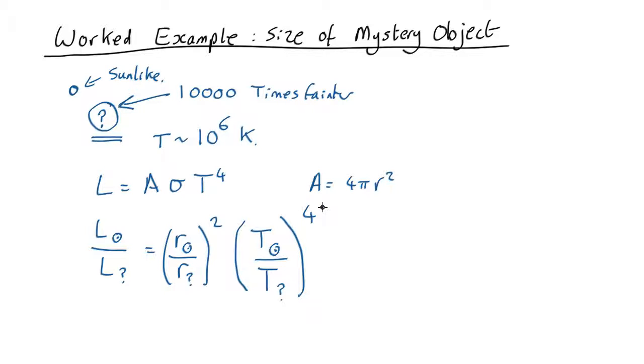Okay, so what can we do with this? Well, we know this ratio is equal to 10,000. We know the radius of the sun-like star because it's the same as the sun, and the temperature of the sun-like star. We know the temperature of the mystery object because we've measured it from our x-ray observations, so the only thing we don't know is the radius of the mystery object.